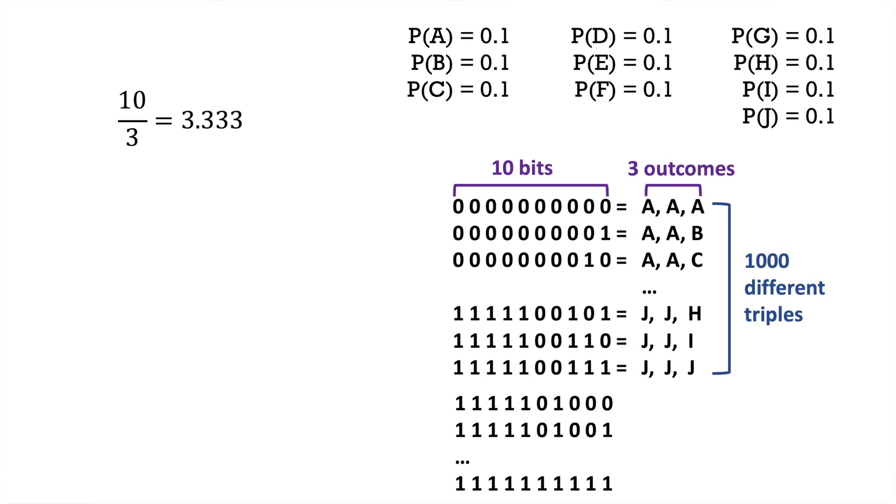This scheme, though, isn't completely efficient as we still have 24 unused states. For the most efficient encoding scheme, we're looking for the case where 10 to the g equals 2 to the b, where g is the number of grouped observations. By taking the log of both sides and rearranging, we can show that the most efficient number of bits to encode each outcome is log base 2 of 10, which is the entropy expression.